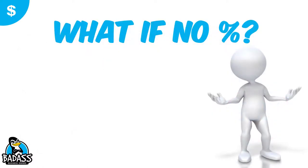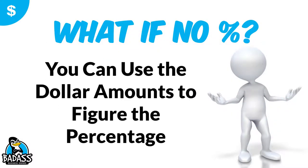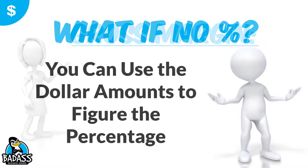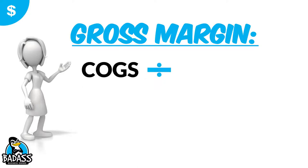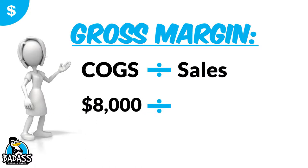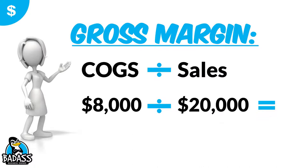If you need to figure it out yourself because you don't have those percentages, you can use the dollar amounts to figure out the percentages. You take your cost of goods divided by your sales, because everything is a percent of sales. So if you have cost of goods of $8,000 and sales of $20,000, that comes out to 0.40 — move the decimal two places and that gives you 40%. So cost of goods divided by sales: $8,000 divided by $20,000 gives you 40%.